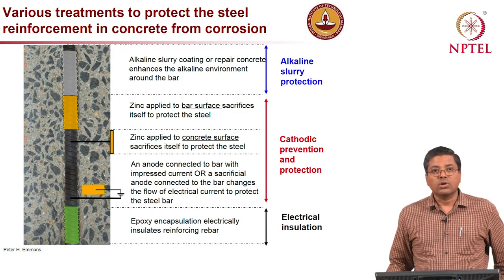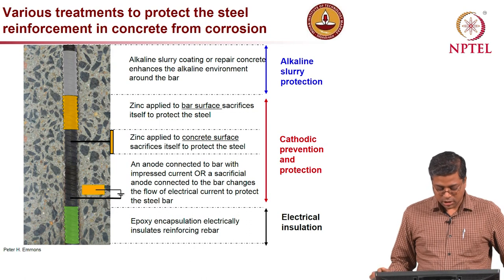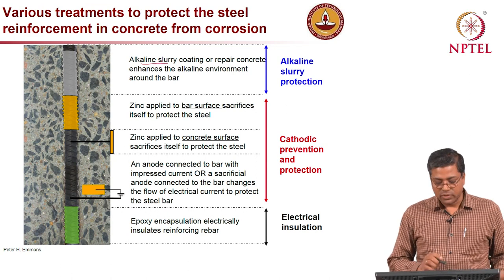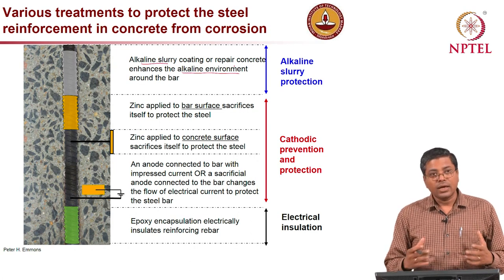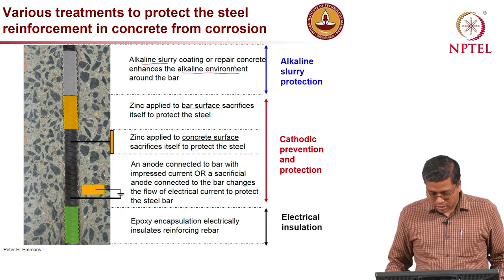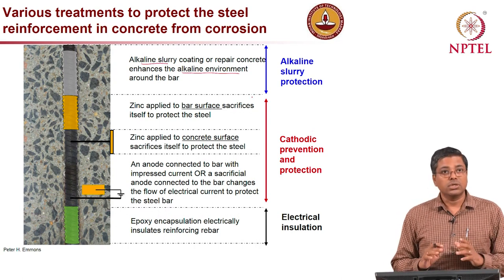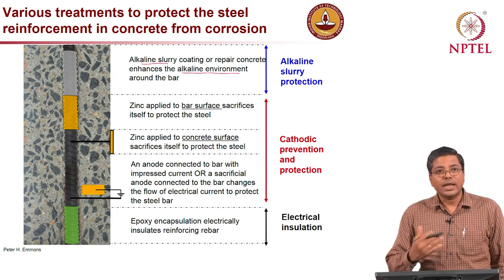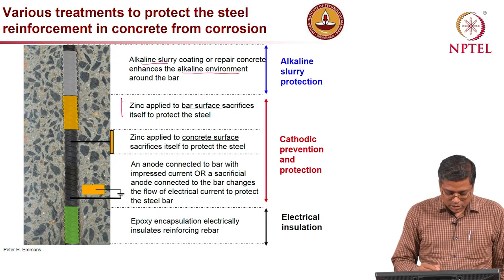Today we will focus on alkaline slurry protection and cathodic prevention and protection. In alkaline slurry protection, an alkaline slurry is applied onto the rebar, providing an alkaline environment that gives a more protective environment to the steel. In cathodic prevention and protection, the first type is zinc coating directly applied to the rebar surface.